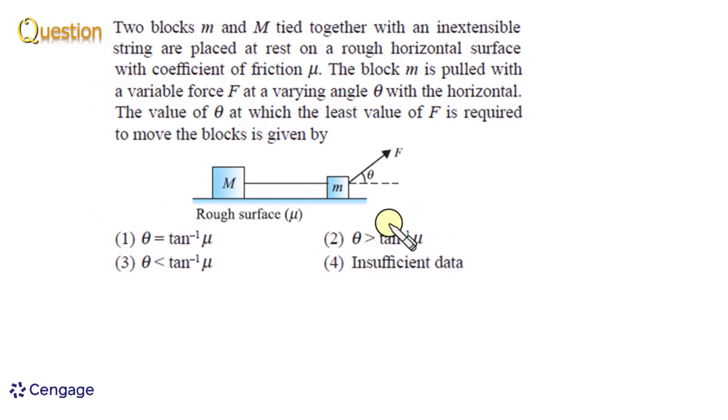In this question, it is given these two blocks capital M and small m, connected together with this light inextensible string, placed on a rough horizontal surface with coefficient of friction mu. The small m block is acted upon by a force capital F at angle theta with the horizontal, and here it is given both capital F and theta are variable. And here we are interested to find the value of theta for which the least value of capital F is required to move the blocks.